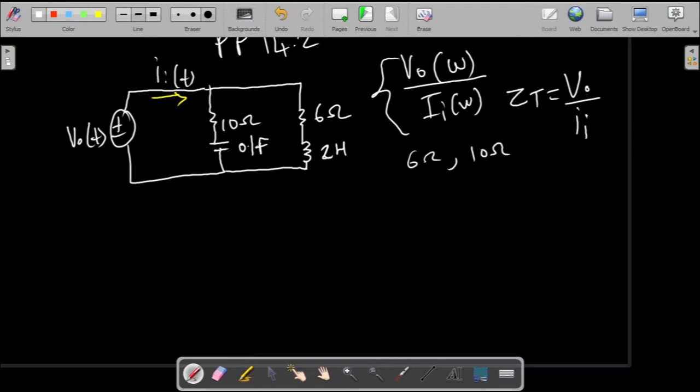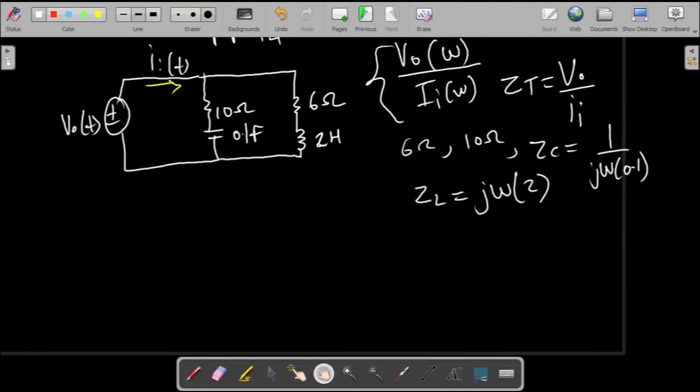So six ohms stays as six ohms and ten ohms stays as ten ohms. Then your capacitance, converting that we're going to have this. Then your inductance, this is what we're going to have.